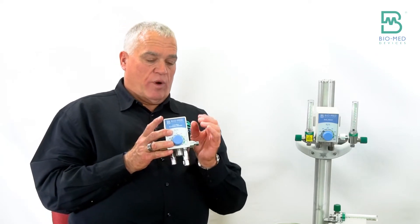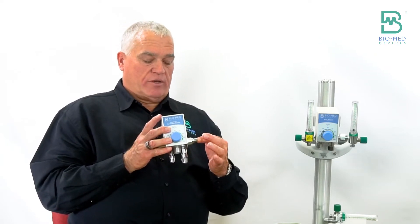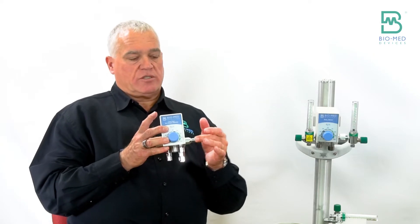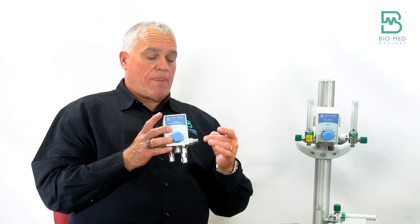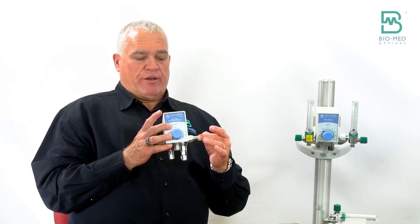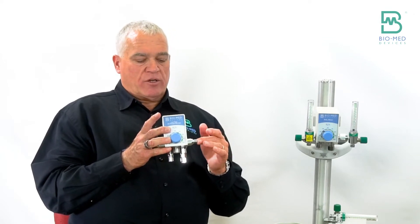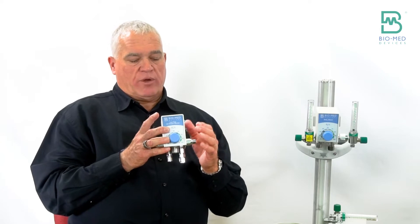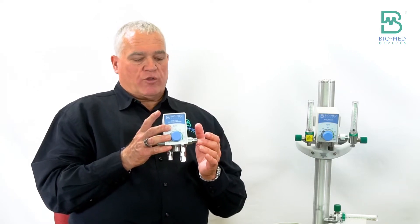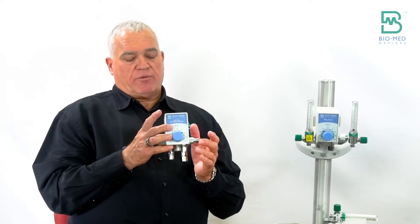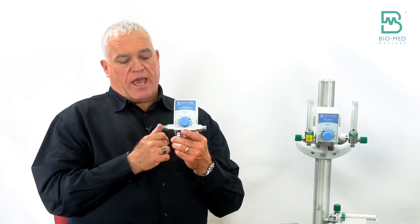The other thing is whenever you add a flow meter to this side of the blender, you activate a three liter bleed flow. Now three liters, it's not a lot of flow, but when you have a fifty bed unit and that flow is going 24/7, that ends up to be quite a lot of gas usage.